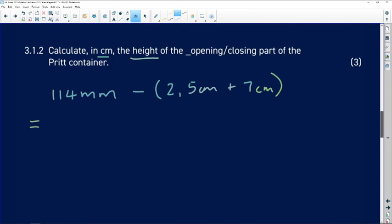Before I can do anything, I cannot work with millimeters and centimeters in the same breath. So I need to do my conversions. I need to convert this to centimeters because my answer needs to be in centimeters. So there are 10 millimeters in a centimeter. So it's going to be 11.4. So it's going to be 11.4 centimeters minus 2.5 plus 7.